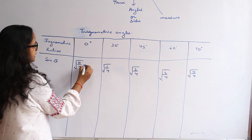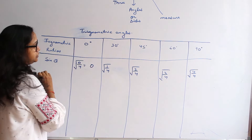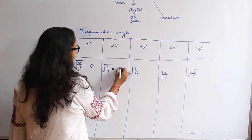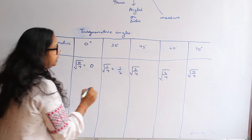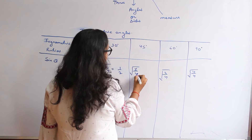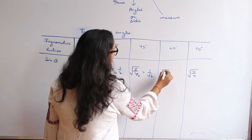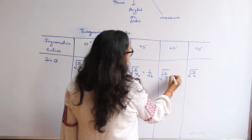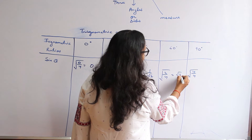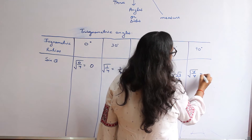Simplifying: 0 over 4 is 0; 1 over 4 gives 1 over 2; 2 over 4 simplifies to 1 over root 2; 3 over 4 gives root 3 over 2; and 4 over 4 comes out to be 1. These are the sin theta values at 0°, 30°, 45°, 60°, and 90°.